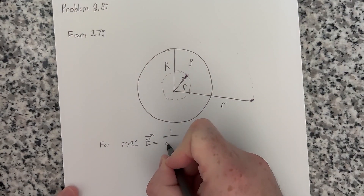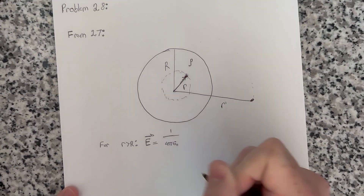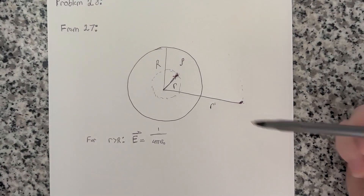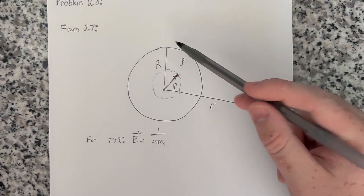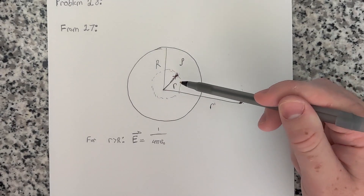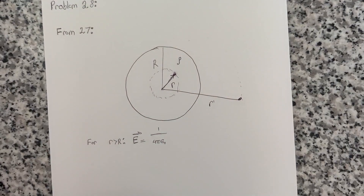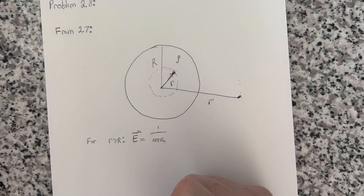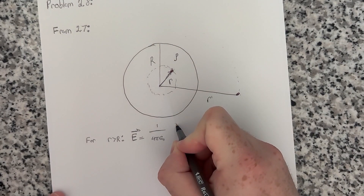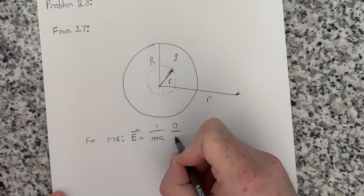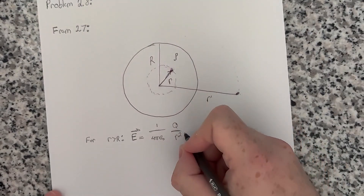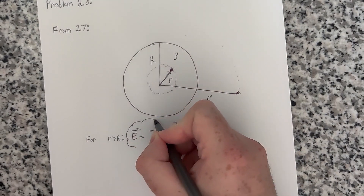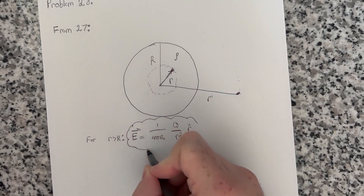For r greater than the radius of the sphere, the electric field still acts as if it's just a point charge: 1 over 4 pi epsilon naught times Q over little r squared, in the r-hat direction. There is essentially no difference from the hollow sphere situation. Whether the charge is on the surface or distributed throughout the volume, as long as it's interior to where we are, that's all that matters. This is the electric field for any point outside of this solid sphere.